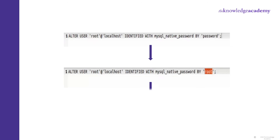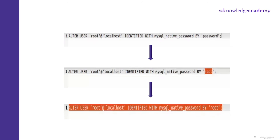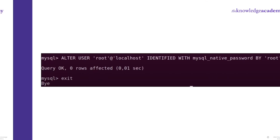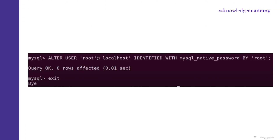Write down the command shown on the screen — where 'password' is written between inverted commas, just replace that with your desired password. Now put this command in the terminal where MySQL is open. Give this command and press Enter. Now the password is set.